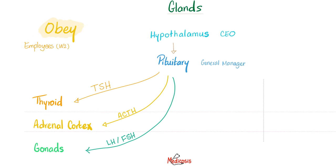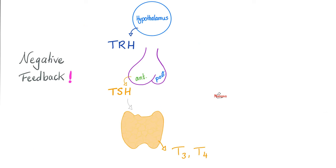So here's the CEO. The hypothalamus wants to talk to the thyroid, so it will secrete TRH — thyrotropin-releasing hormone — which will go to the pituitary, specifically the anterior pituitary. This anterior pituitary is going to secrete TSH. TSH is going to go and talk to the thyroid gland, and the thyroid gland is going to respond by secreting T3 and T4. T4 is more abundant, and that's why T4 can be known as the thyroid hormone.